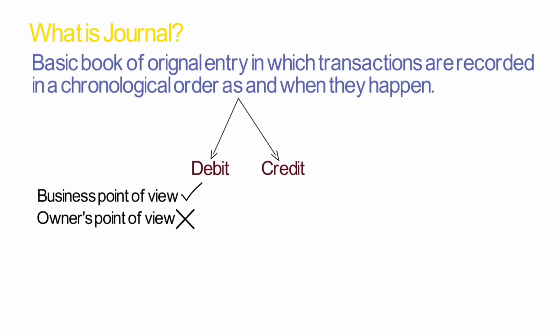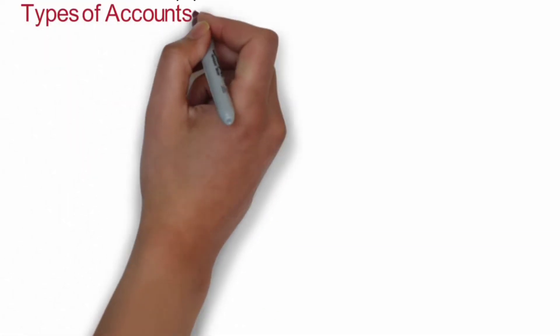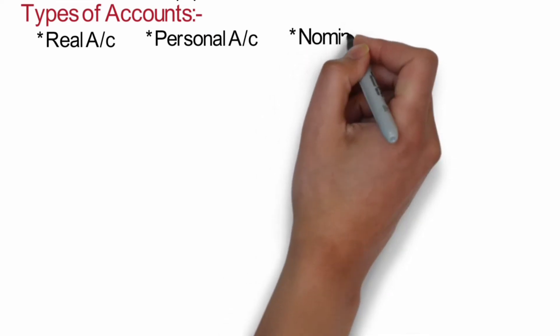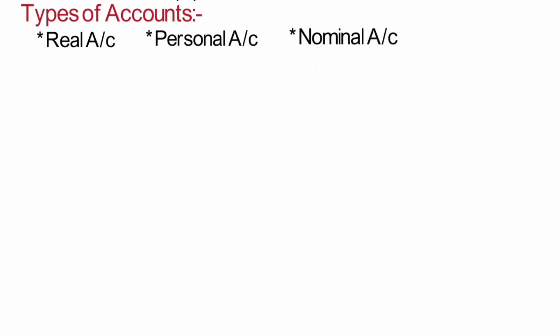I have already discussed this concept in my previous video — I'll mention the link in the description box. Further, there are three rules for recording any transaction, but before discussing the rules we need to know the types of accounts. Accounts are classified into three types: first, real account; second, personal account; third, nominal account.